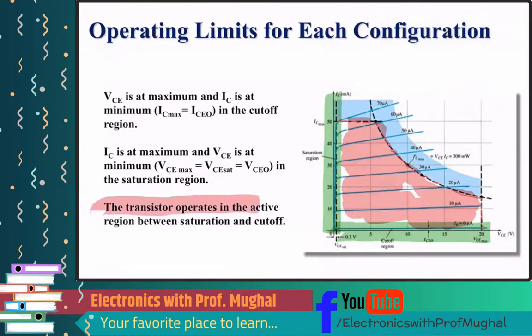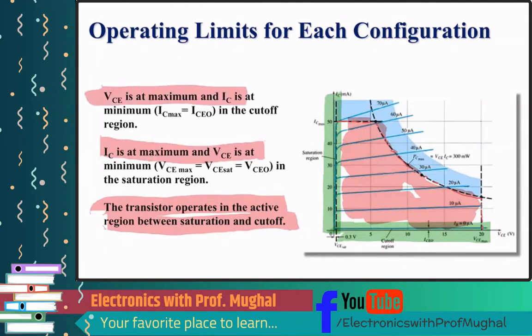The transistor operates in the active region, which is between saturation and cutoff. We know that Ic is at maximum when Vce is at minimum, and Vce is at maximum when Ic is at minimum. So here, Ic is maximum but Vce is minimum — that corresponds to the saturation region on the graph.